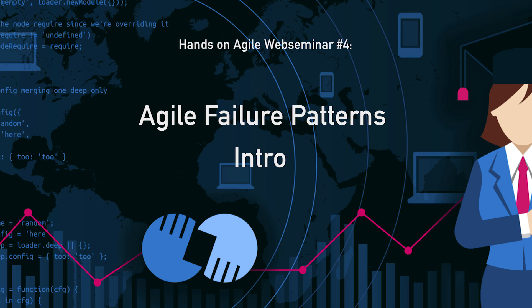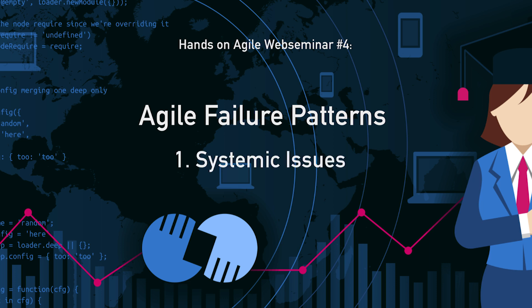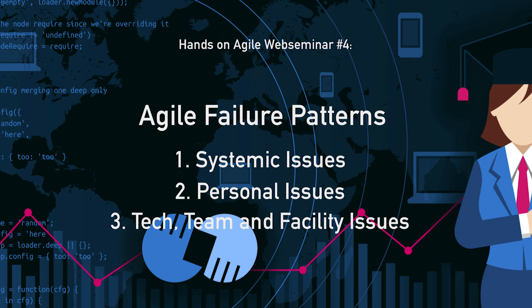In my experience, functional silos, rigid budgeting processes, and hierarchies from the heydays of the Ford Motor Company prove to be really fertile ground for Agile transitions to fail. There are numerous signs of failure depending on the context of the organization — its size, its history, the products, what markets you are addressing, in which part of the world you are actually working. I picked my dirty dozen and arranged them into three categories: systemic issues, personal issues, and tech, team, and facility issues.